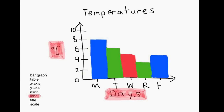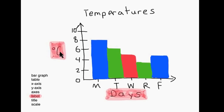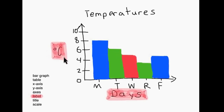Now we're looking at our labels. We have our x-axis and our y-axis, but we need to make sure we put a label on each. For the x-axis, you think: what are Monday, Tuesday, Wednesday, Thursday, Friday? Those are the days of the week, so our label simply is "Days." Coming along to our y-axis, we see the numbers 0, 2, 4, 6, 8, 10 — what do these numbers mean? They mean temperatures in degrees Celsius. So I put "Degrees Celsius" as my label for my y-axis.